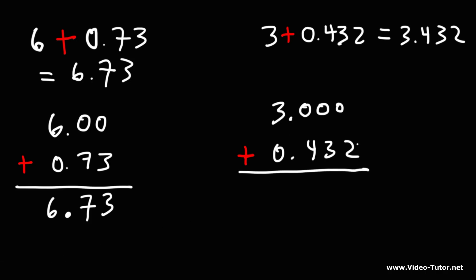So now let's add. 0 plus 2 is 2. 0 plus 3 is 3. 0 plus 4 is 4. And 3 plus 0 is 3. So we get 3.432.